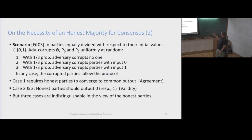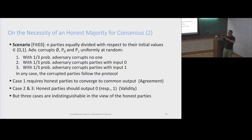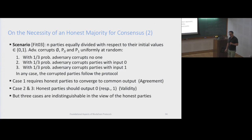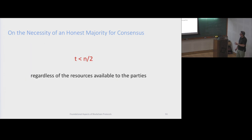This holds for consensus. We're going to see later that we can adapt this situation to the case of a distributed ledger, where we have transactions being installed and the thing has to make progress. A variant of this impossibility proof tells us that to achieve ledger consensus, you still need the majority of honest parties.